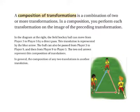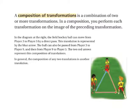A composition of transformations is a combination of two or more transformations. In a composition, you perform each transformation on the image of the preceding transformation. In the diagram at the right, the field hockey ball can move from player 3 to player 5 by a direct pass — this translation is represented by the blue arrow. The ball can also be passed from player 3 to player 9, then from player 9 to player 5. The two red arrows represent this composition of translations. In general, the composition of any two translations is another translation.